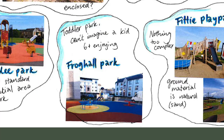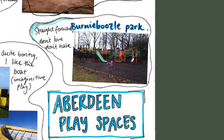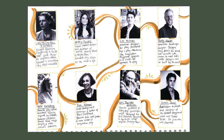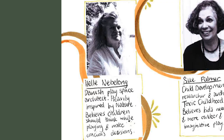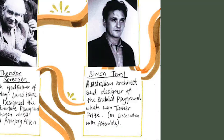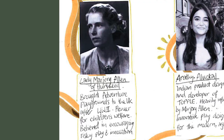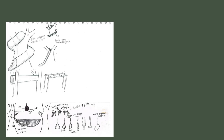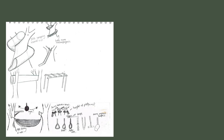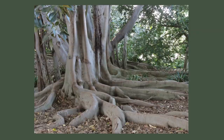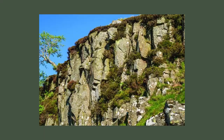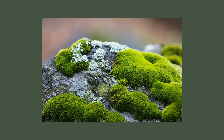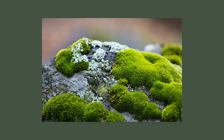In a city full of conventional kids' play parks, I fancied myself as a bit of a Rathia Luckl, Kaz Holman, Rusty Keeler, Heli Nibelong, Simon Terrell, or even a Marjorie Allen. I set about ideating elements of a playground inspired by natural features such as vines, buttress roots, rocks, trees and moss.